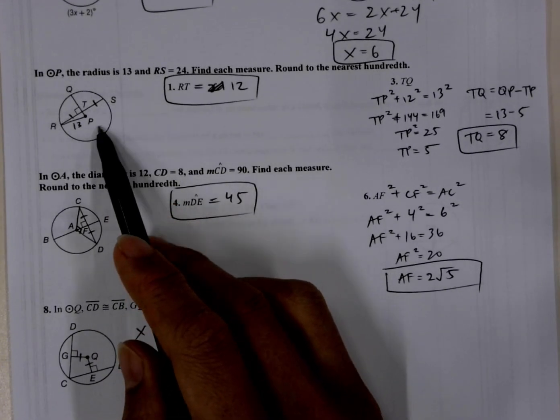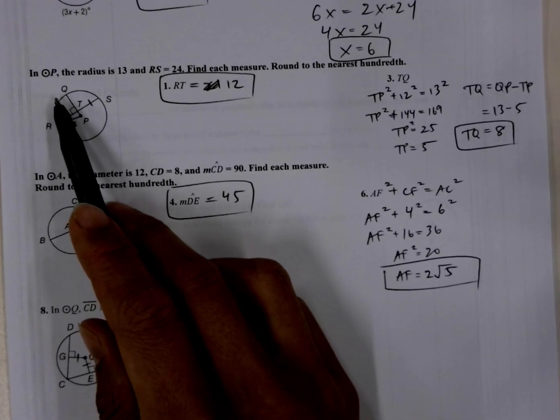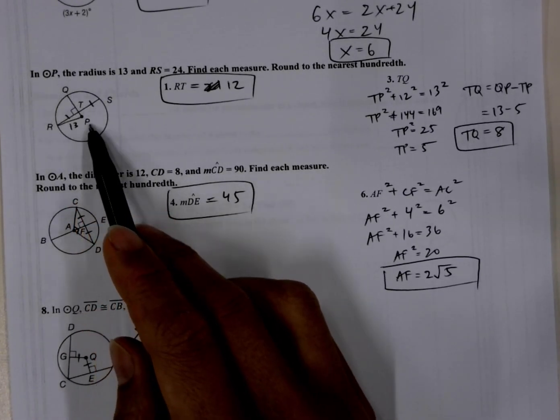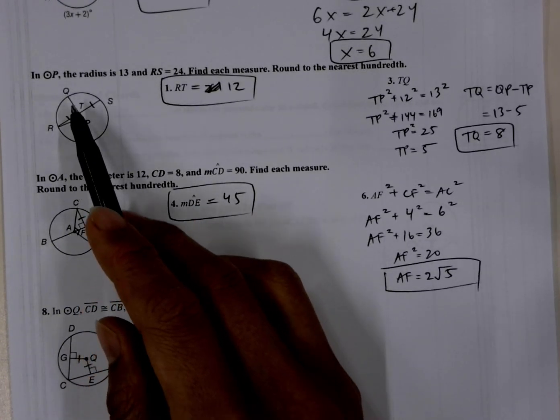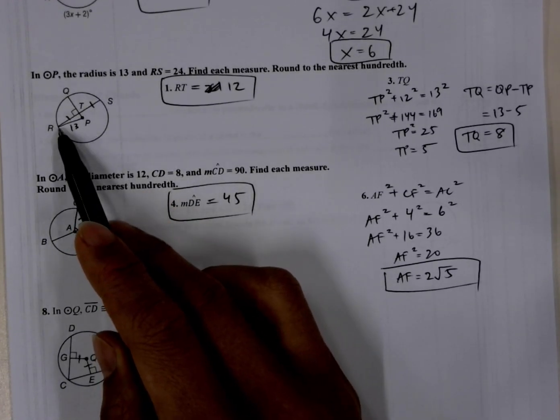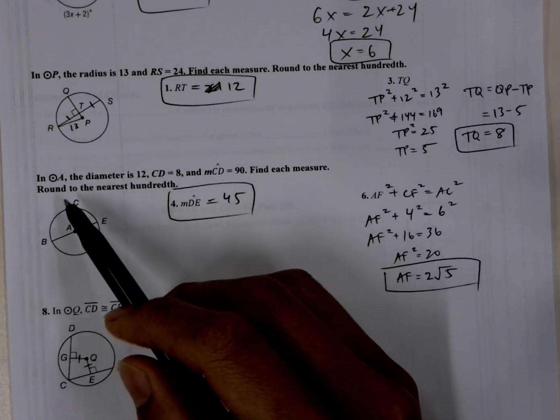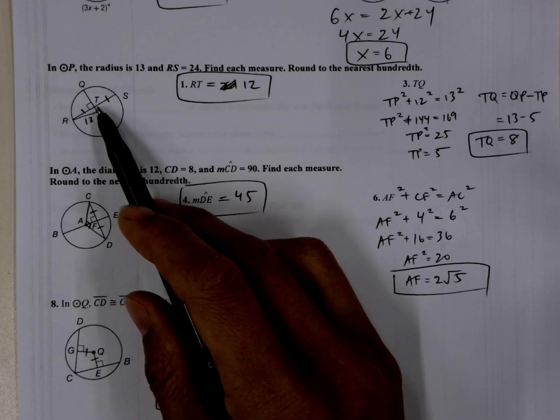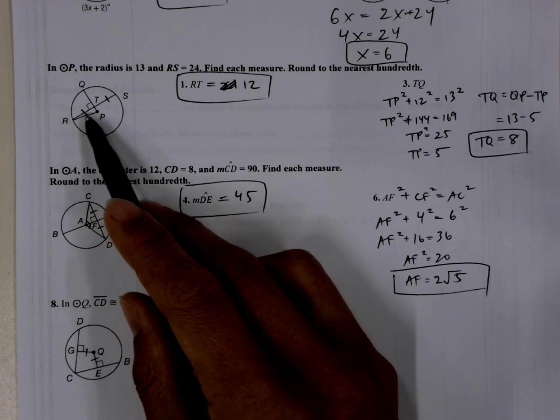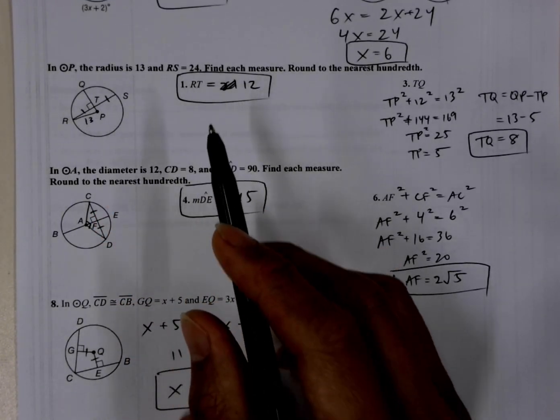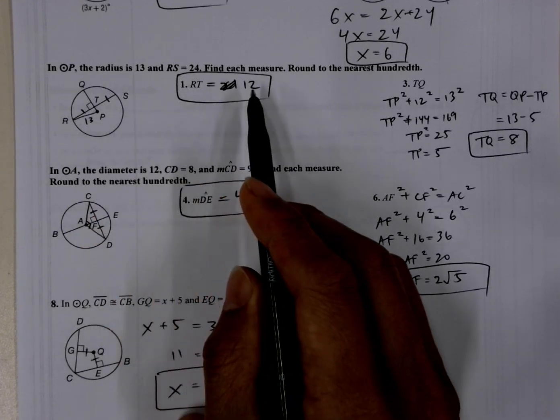So we have radius is 13, so that means that if we drew this line from here, RP, that would be 13, or also QP is a radius, so that would be also 13. And so how do we find RT? We know that QP is perpendicular to this chord RS, which means it bisects it. That's the property that we went over in the lesson. So that means RT is congruent to TS, and if we know that RS is 24, then we know that RT is half of 24, so that's 12.